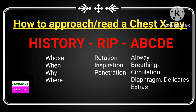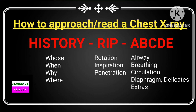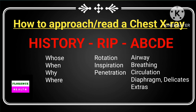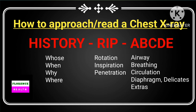In ABCDE: A is for examination of airway, B for breathing, C for circulation, D for diaphragm and delicates — meaning breakable structures like bone — and E for extra, which includes checking the position of the central line, tubes, foreign bodies, artificial heart valves, and pacemakers.